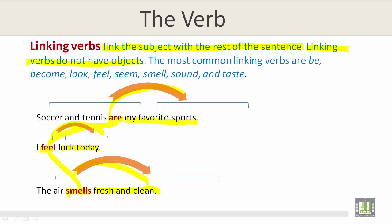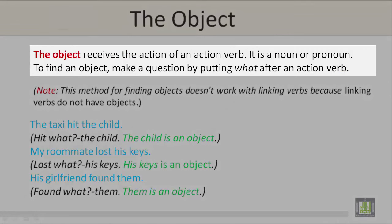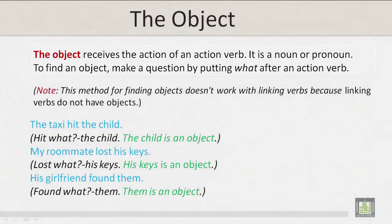Linking verbs do not have objects. The object receives the action of an action verb. It is a noun or pronoun. To find an object, make a question by putting 'what' after an action verb. This method doesn't work with linking verbs, because linking verbs do not have objects. The taxi hit the child — hit what? The child. The child is an object. My roommate lost his keys — lost what? His keys. His keys is an object.